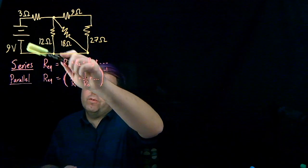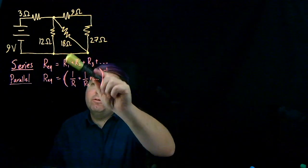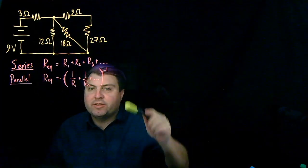So we have a battery and we have a resistor array, and we want to try to use our equivalent resistor rules for series and parallel to make this a little bit simpler.